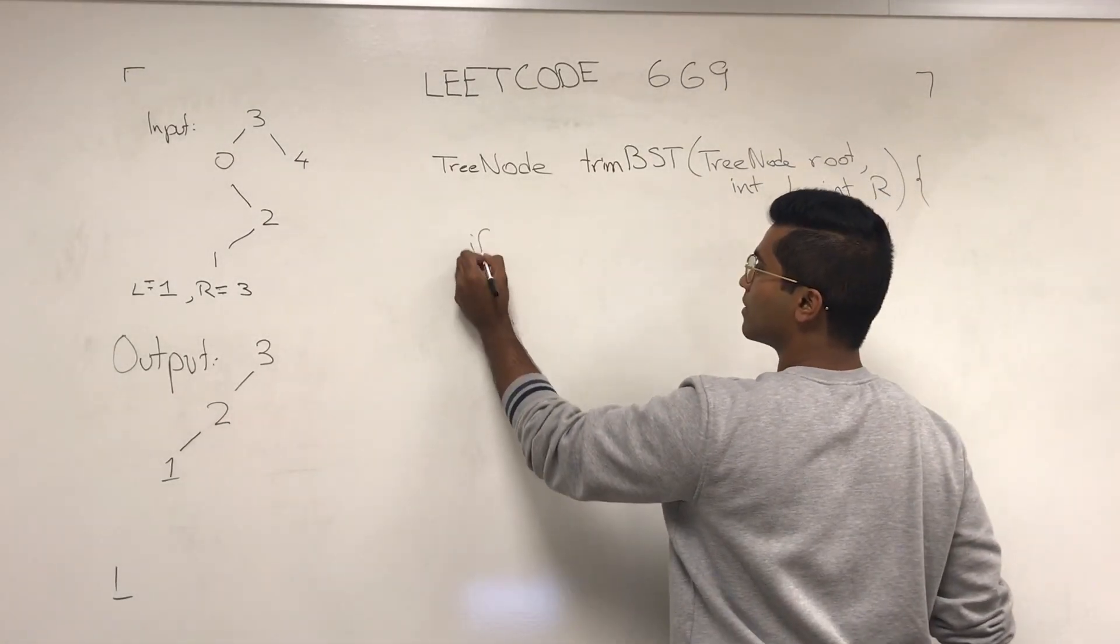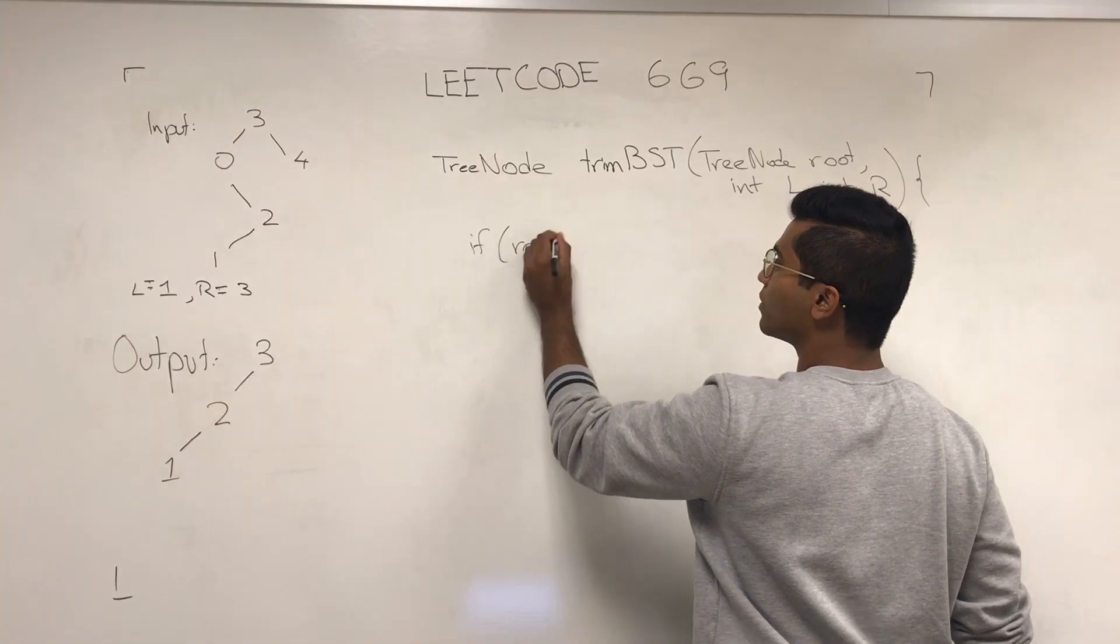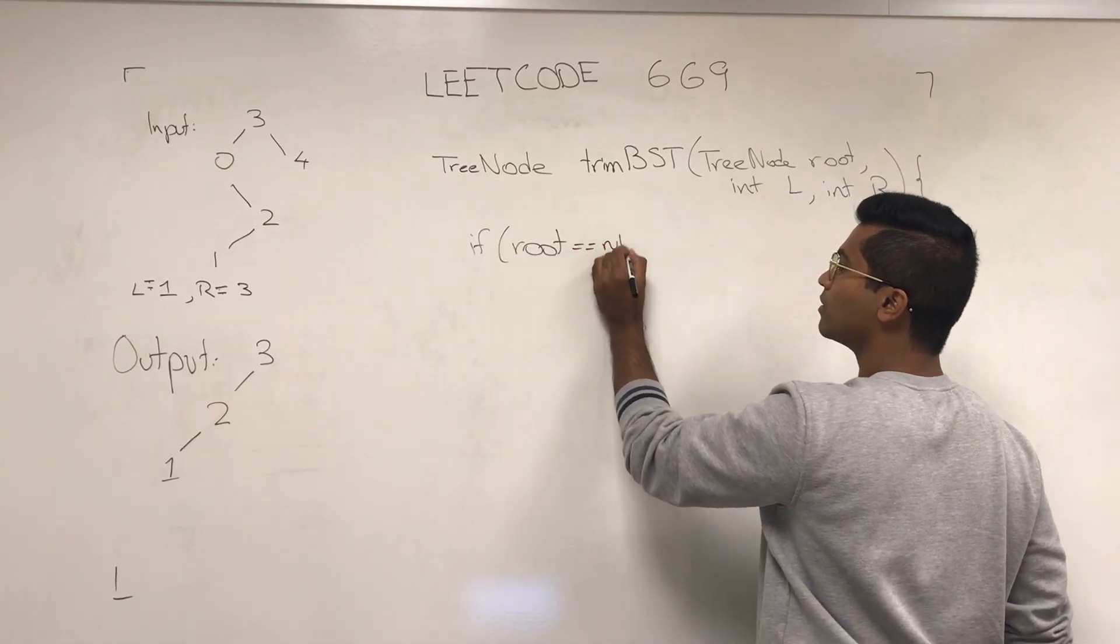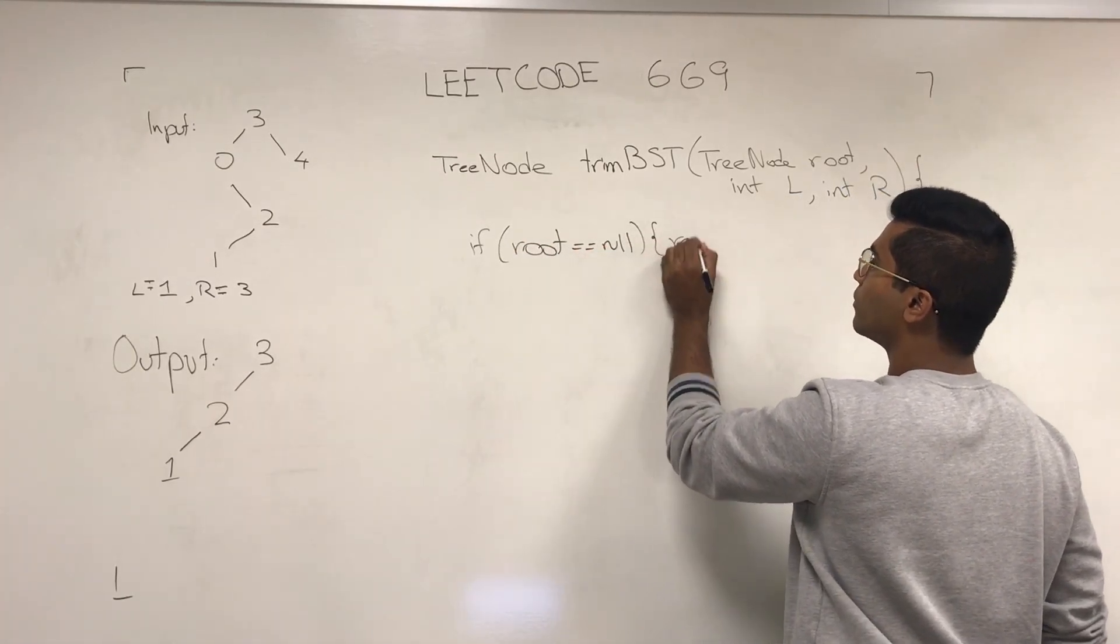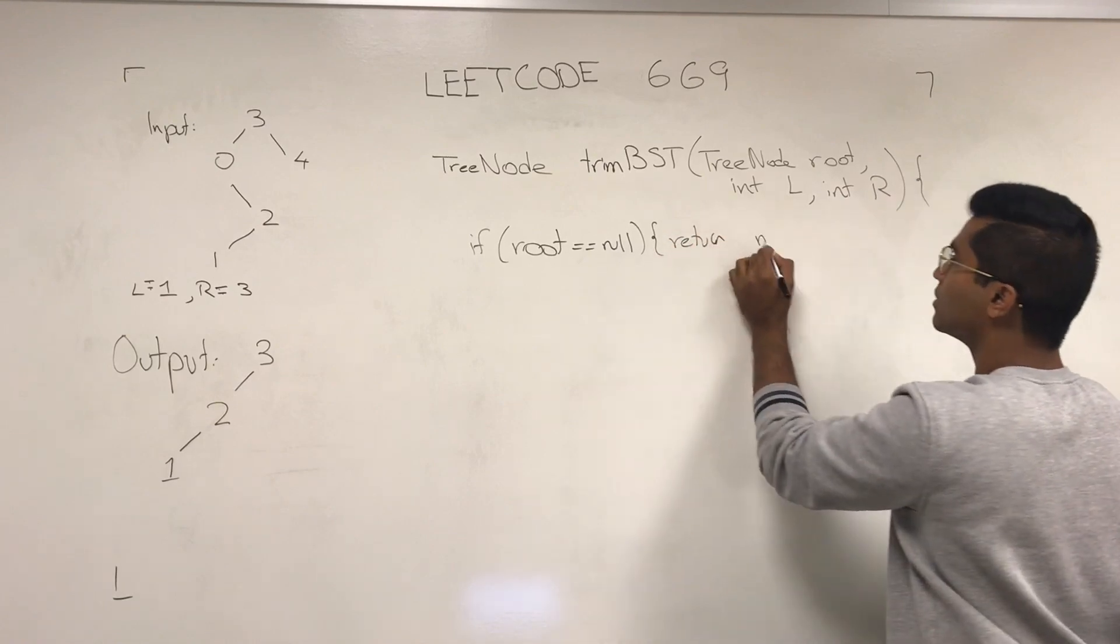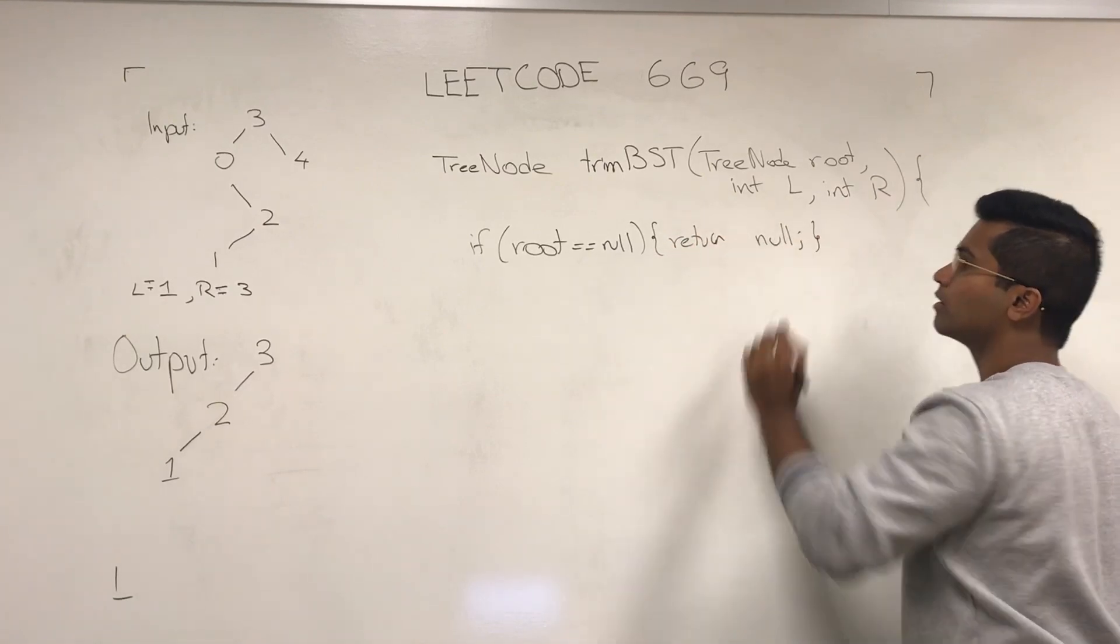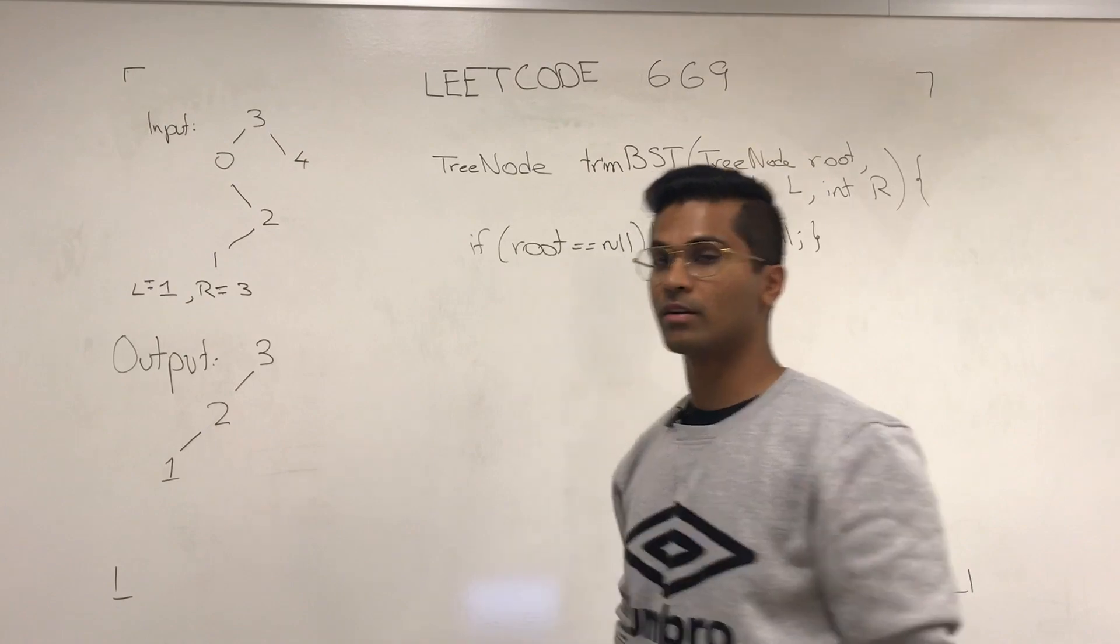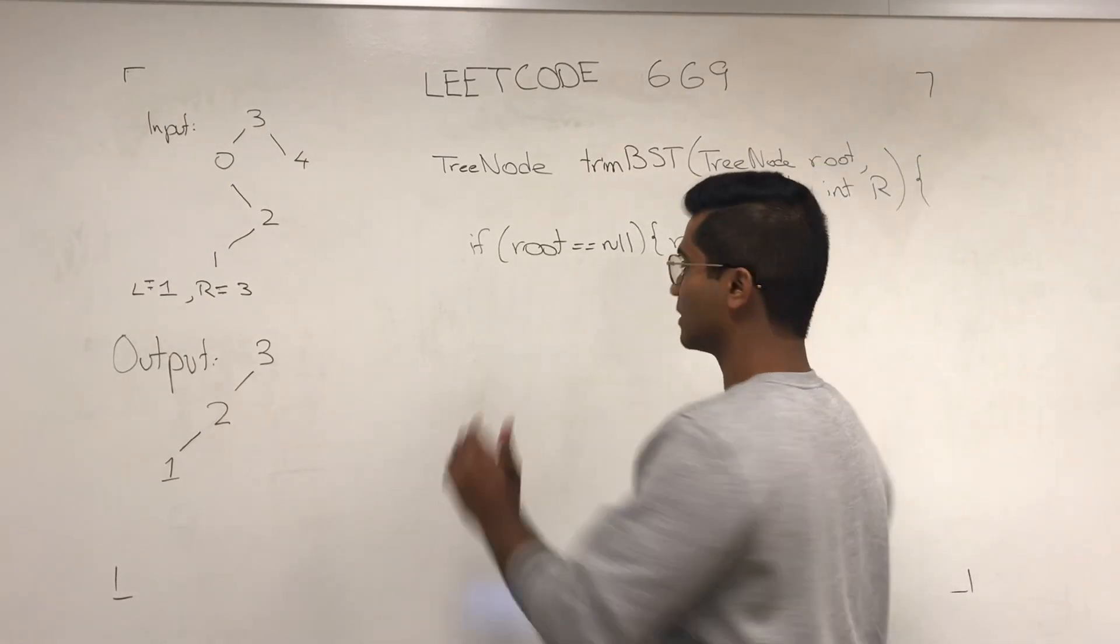Let's get into it. So if the root is null, we return null. That's pretty standard in all recursive binary search questions.